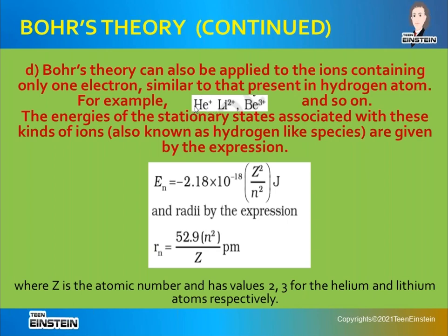Bohr's theory was given for ions containing one electron. Helium has atomic number 2; helium-plus has lost one electron, leaving one electron — making it a hydrogen-like species. Similarly, lithium two-plus and beryllium two-plus are hydrogen-like species. This is actually a drawback of Bohr's theory — it cannot be applied to other elements.